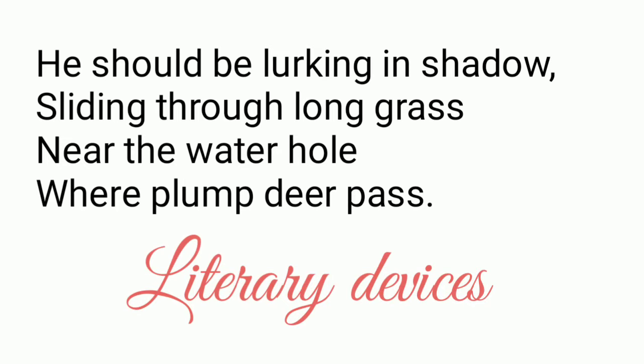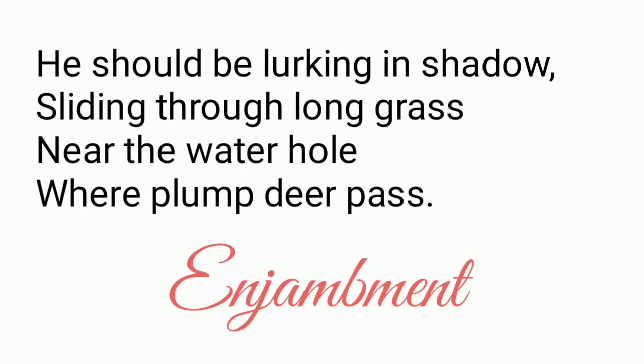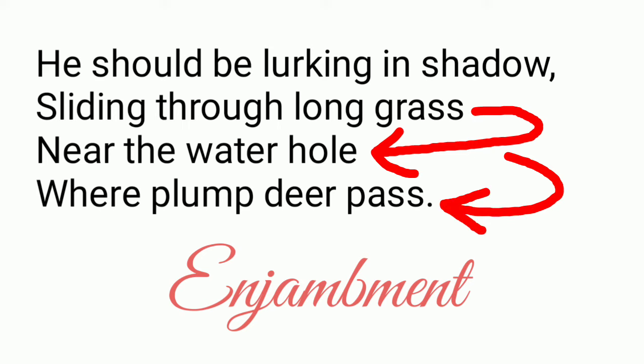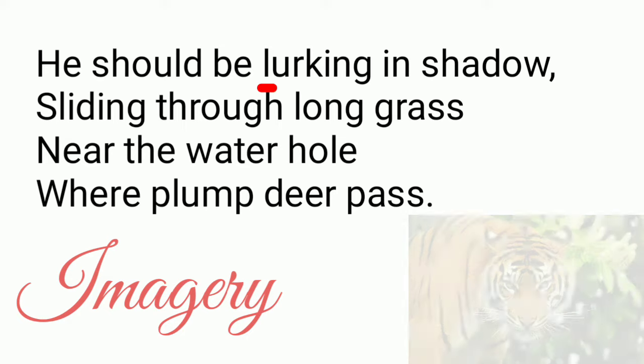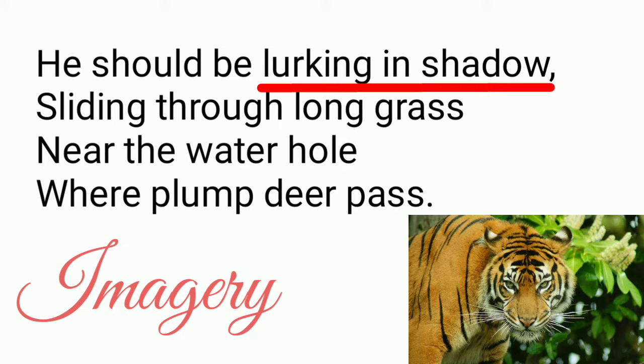Here we talk about the literary devices. Enjambment is very evident, repeated in the second and third lines — no comma or punctuation mark between these lines. Then we have alliteration in 'plump deer pass,' where the sound of 'P' is repeated. And again, imagery is used by the poet to depict the activities of the tiger lurking in shadows.